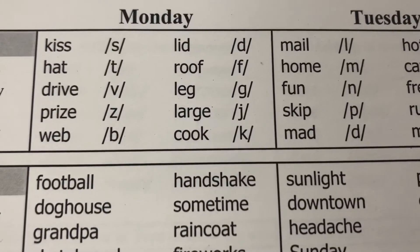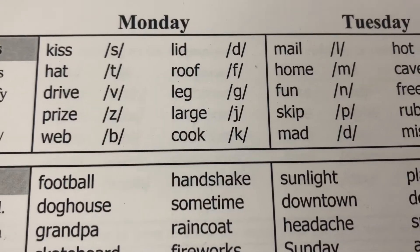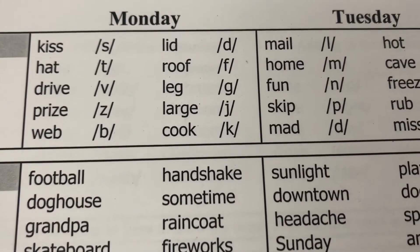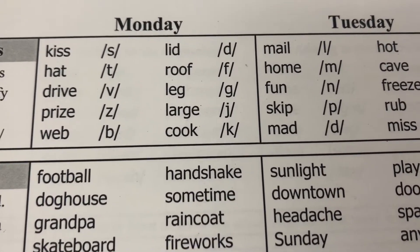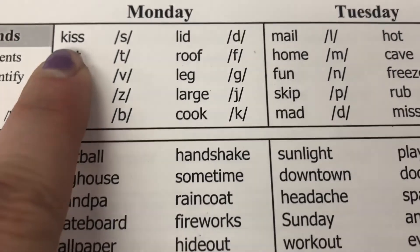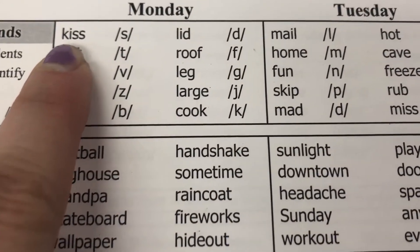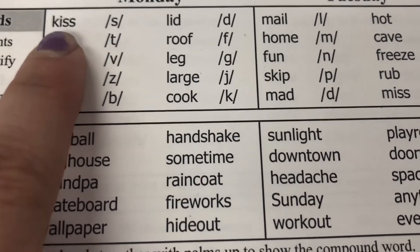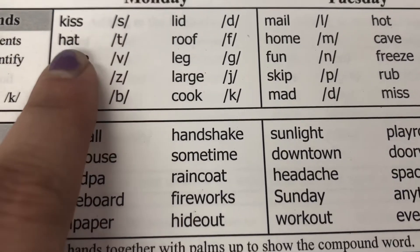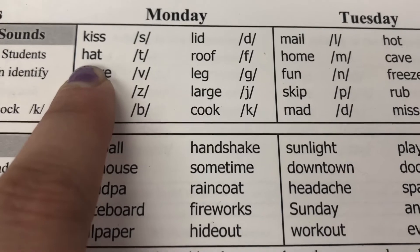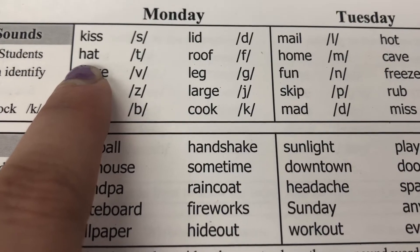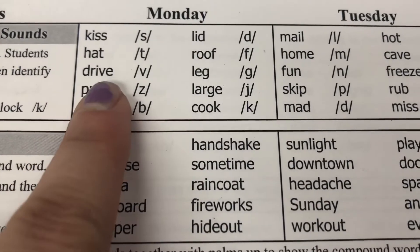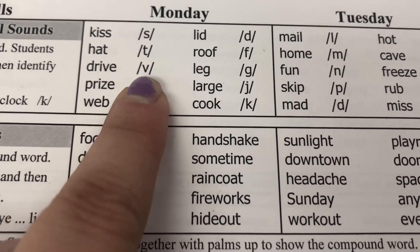Now we are doing the final sounds in words. I'm going to say the word, students would repeat the word, and then identify the final sound in that word. First one: kiss — the last sound is 'ss.' Hat — T. Drive — V.